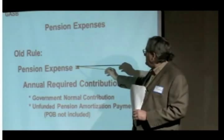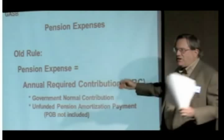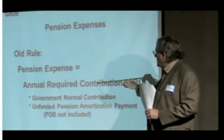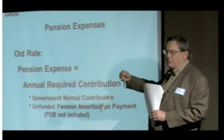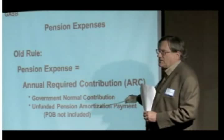The pension expense that the county is going to report is the annual required contribution. It's more complicated than this, like everything, but this is the basic concept. The amount that the county is supposed to pay to the pension fund is going to be reported as its expense, and there are two parts to this contribution: the normal contribution that Jane and the county are splitting, and then the extra payments that only the county has to make to amortize the unfunded liability.